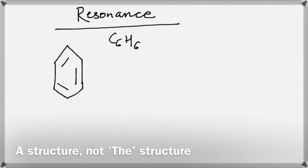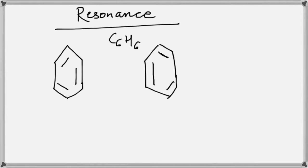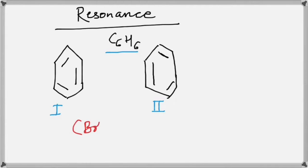Some guy says that he can draw benzene in another way — draw the hexagon and then flip the positions of the double bonds, and we end up with a second structure. Both of these structures contain 6 carbon atoms and 6 hydrogen atoms. So which of these is the true structure of benzene — structure 1 or structure 2? The answer is that benzene can be represented by both these structures.